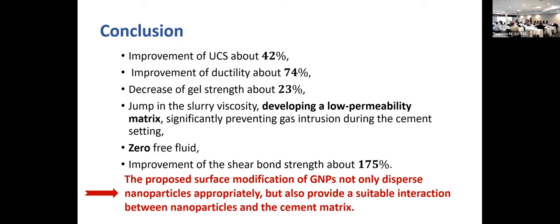An online question asks: have you looked at lower GNP loadings in the range of 0.05 to 0.01%? Our best result was at 0.2% by volume, and I think those values referenced are in weight percent — those are actually much larger than the concentration we used. Most of the numbers in the literature are using higher concentrations than ours. Also, those lower values likely refer to graphene specifically, which is different from graphite nanoplatelets — so we can't really compare directly.